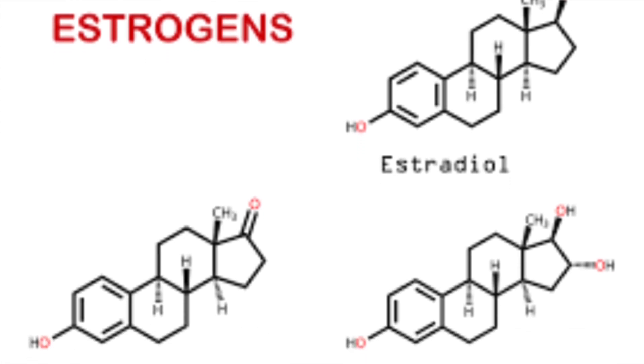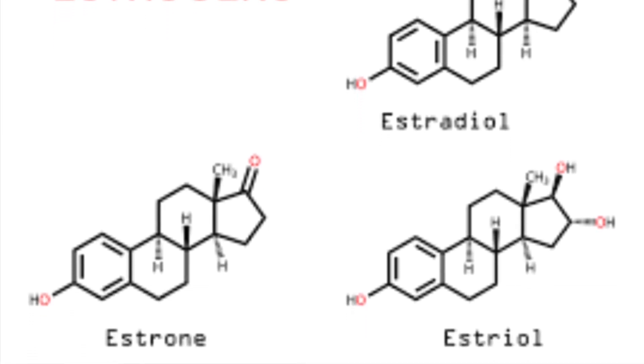Number two: urine testing. Estrogen can also be measured in your urine — actually, the metabolic waste of estrogen is what we measure. You have to collect the urine for 24 hours to be accurate, and it matters where you are in your menstrual cycle again. Estrogen metabolites can also be spot tested, meaning a single urine sample, which measures different types of estrogen in ratio to one another. The different types of estrogen are estradiol, estrone, and estriol.